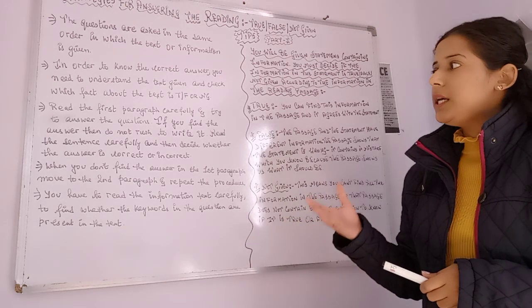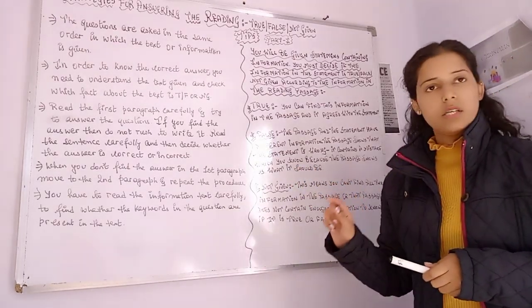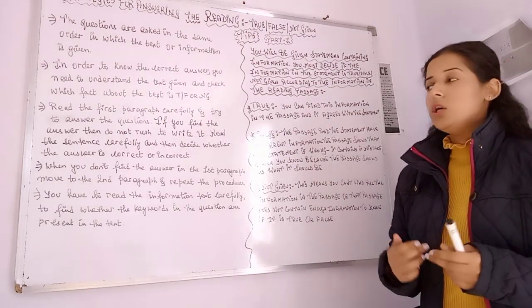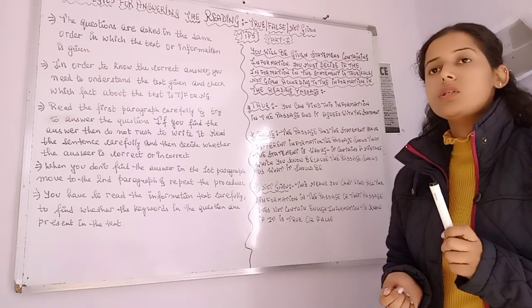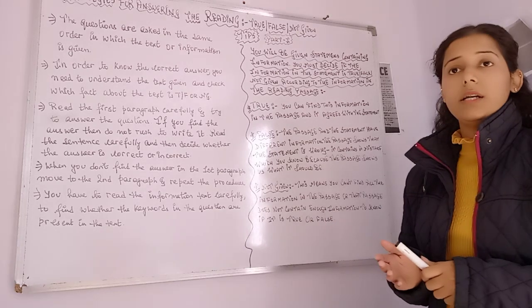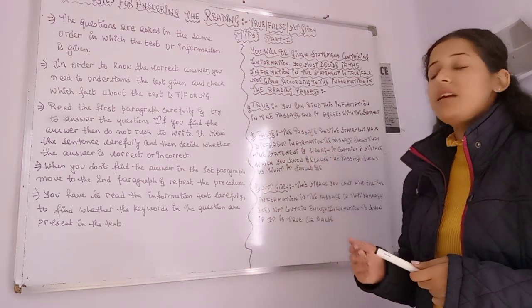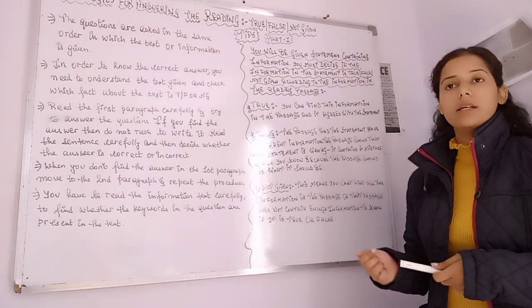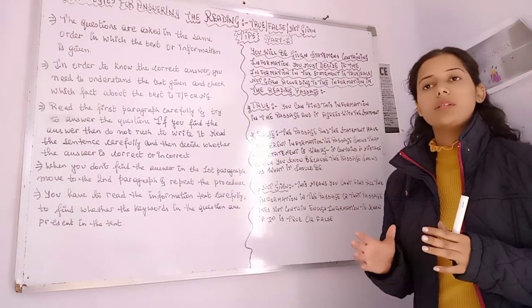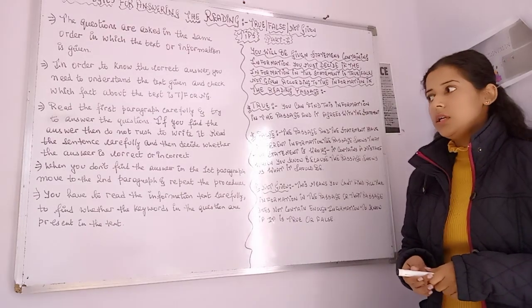The third strategy: read the passage carefully and try to answer the question. When a question is given, read the statement first and underline the keywords. Use the skimming and scanning technique, then jump to the relevant paragraph and read it carefully. If you find an answer, do not rush — reread the sentence carefully and decide. Sometimes the keyword matches but the full statement does not, so you must understand the statement fully, not depend only on keywords.